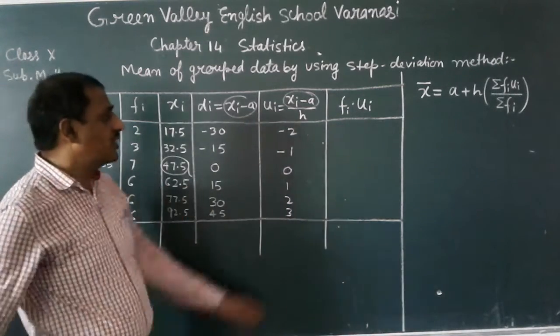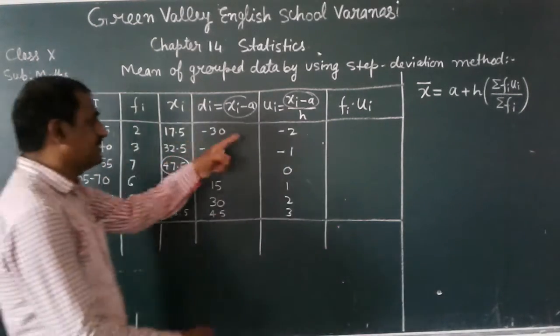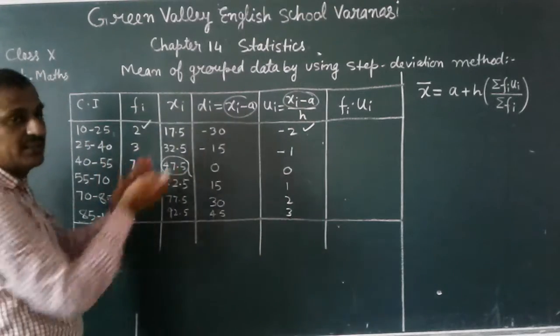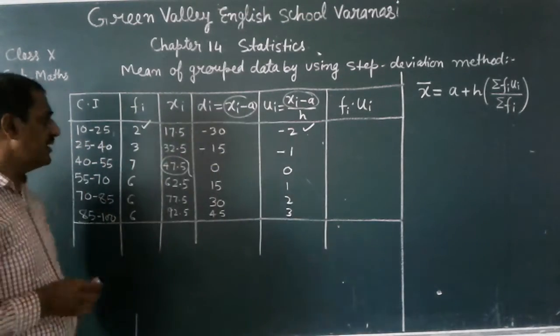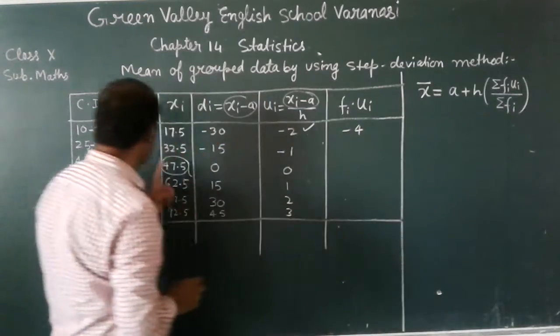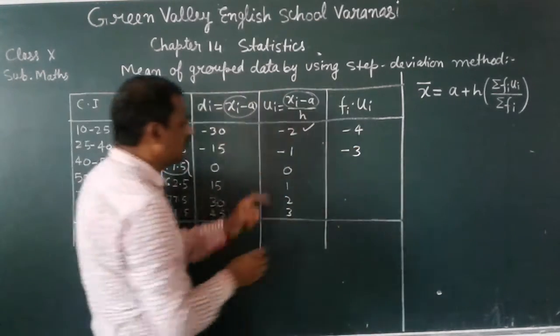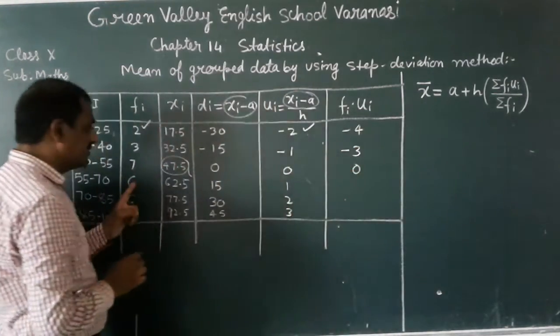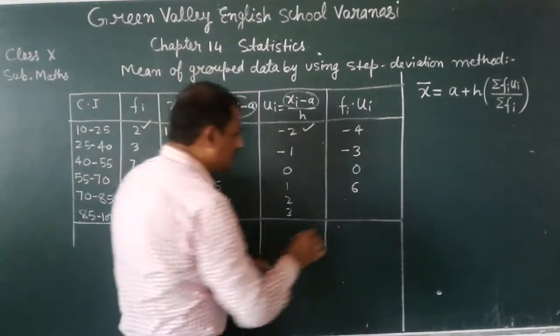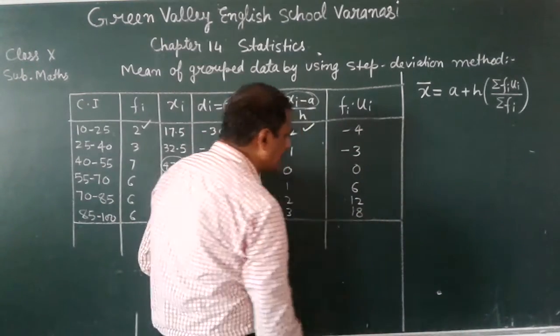Now in the next column, fi into ui. Fi is 2 and ui is this. Now I am going to find the product of this column to this column of the corresponding elements. 2 into minus 2 is minus 4. 3 multiplied by minus 1, minus 3. 7 multiplied by 0 is 0. 6 multiplied by 1 is 6. 6 multiplied by 2 is 12. 6 multiplied by 3 is 18.